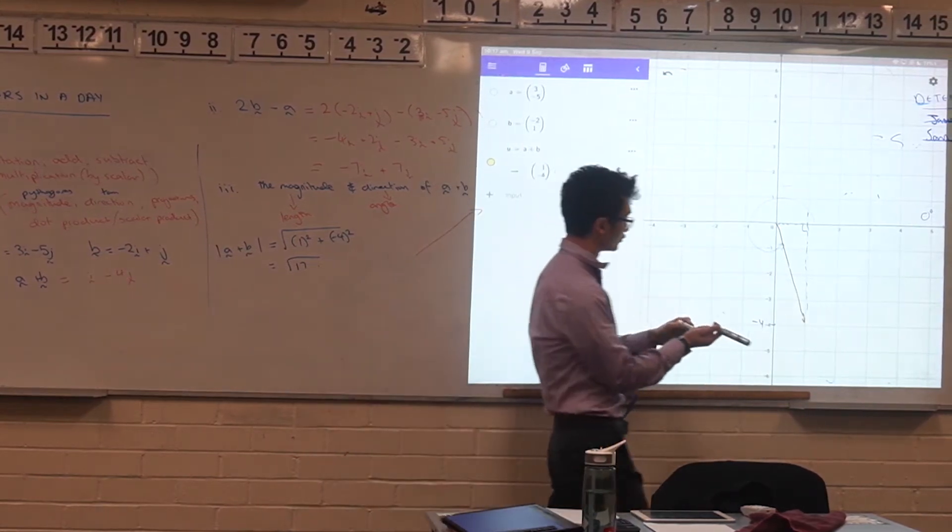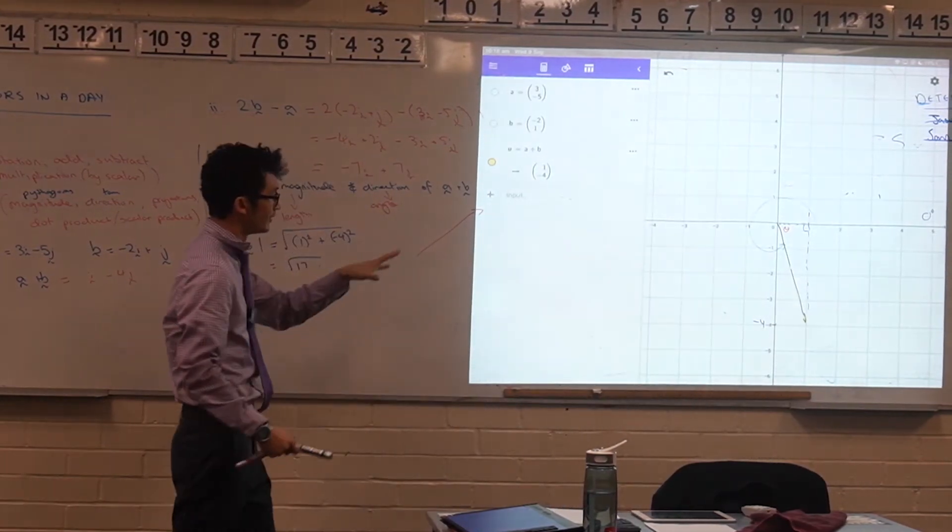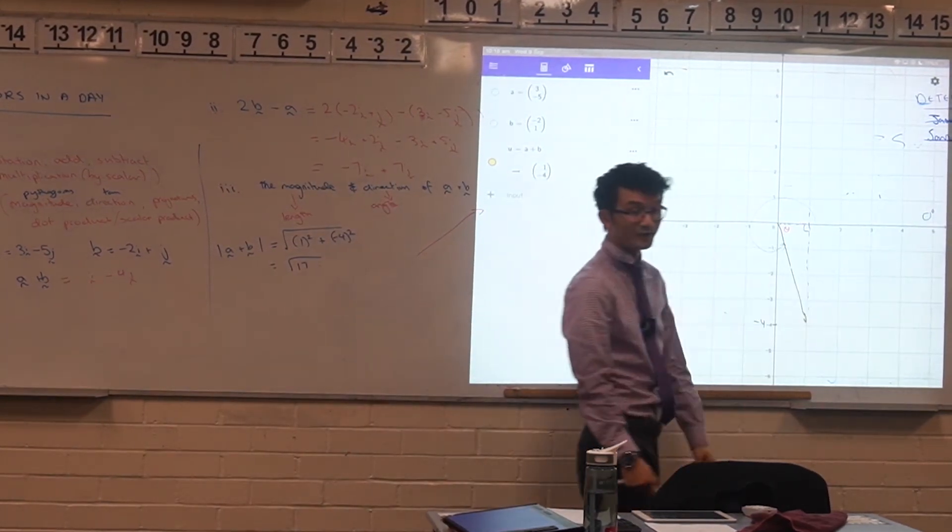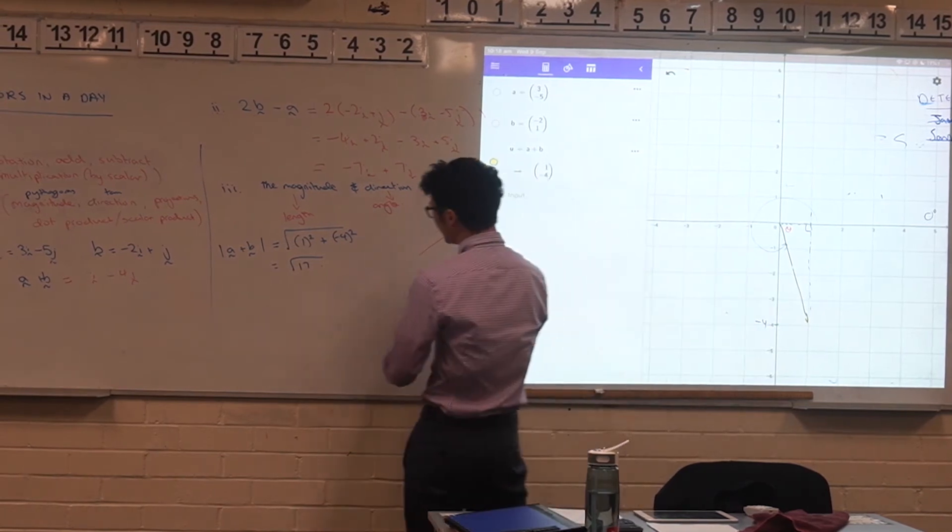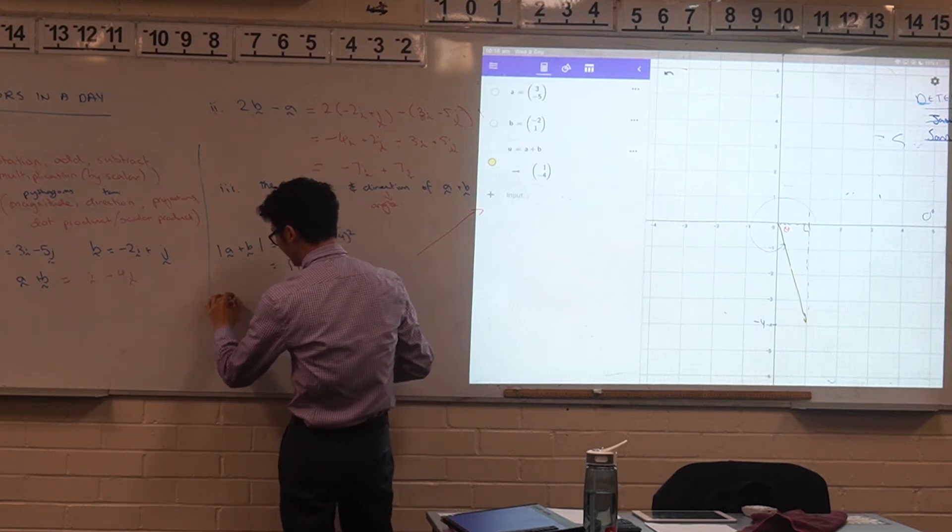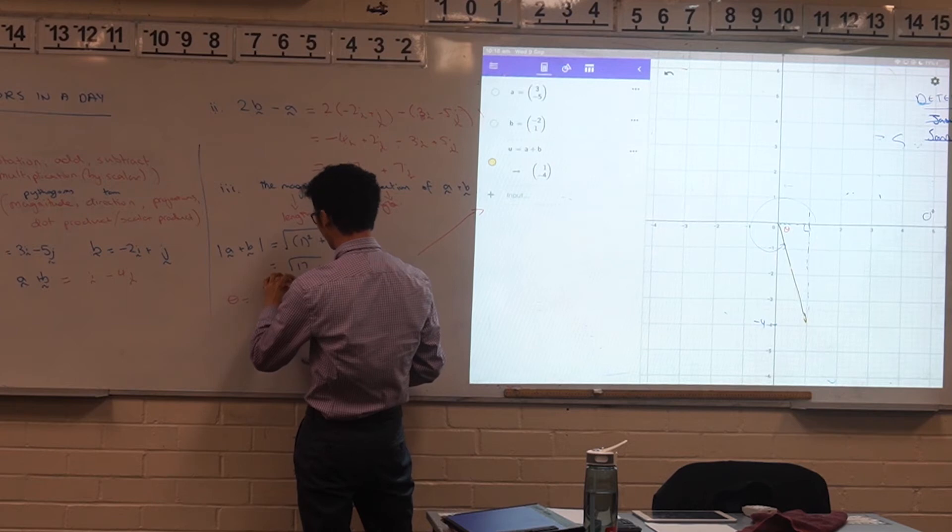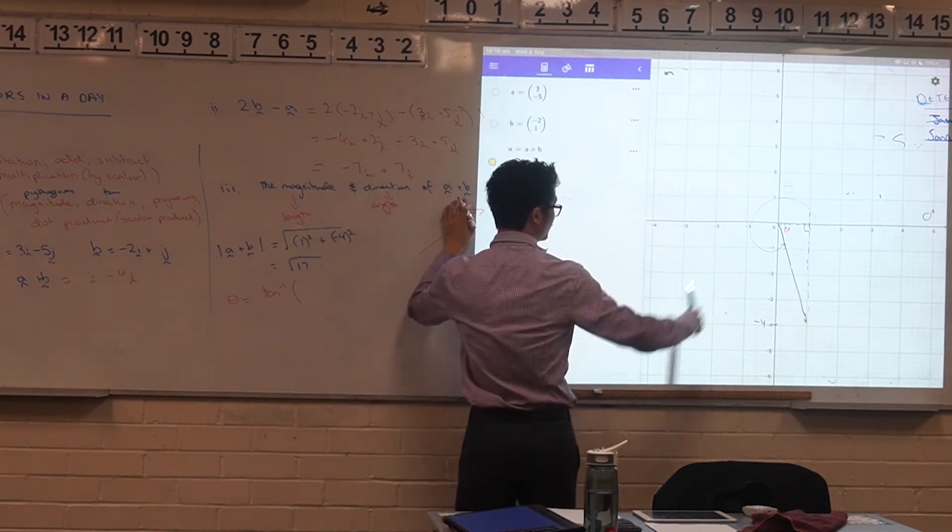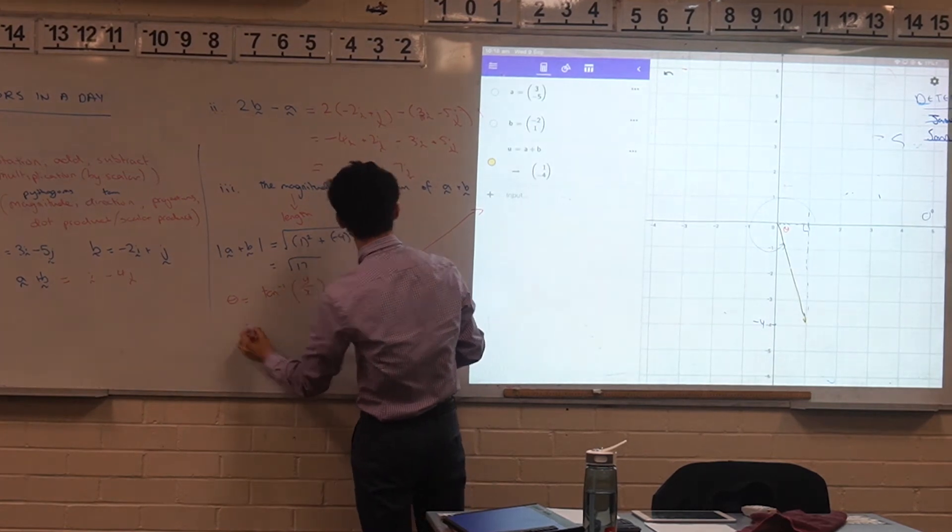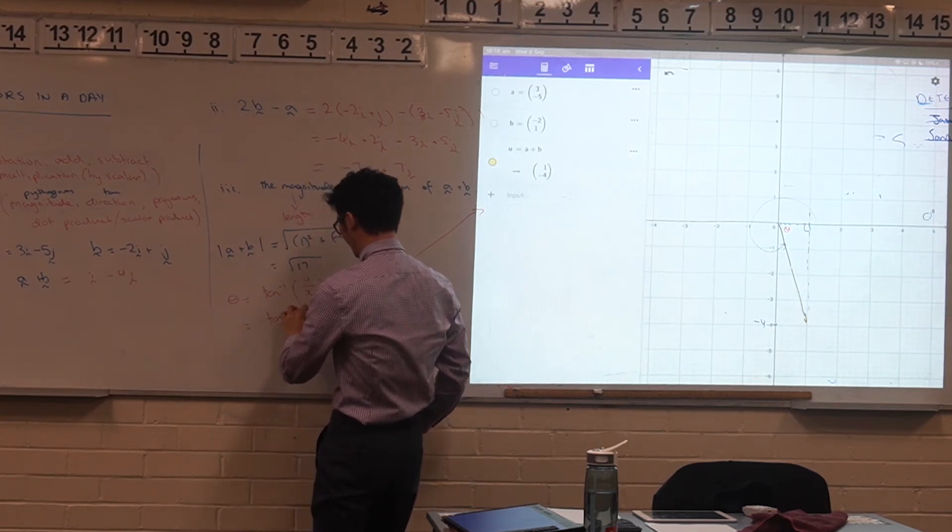Going back to our right angle triangle idea, if I just have theta over here, and that's my theta angle, then I can actually use trig to do that. You've got this vertical component, and you've got this horizontal component, and a formula in some sense for the direction would be that theta, the angle that you're looking for, can be found using inverse tan of the vertical divided by the horizontal, so y on x. And for a and b, that's going to be inverse tan of negative 4 on 1.